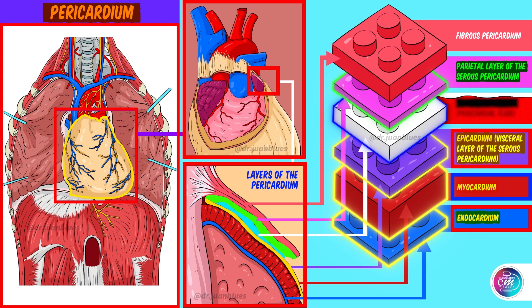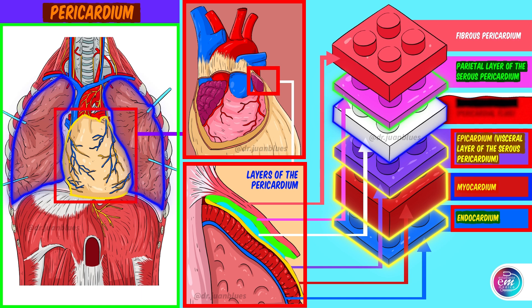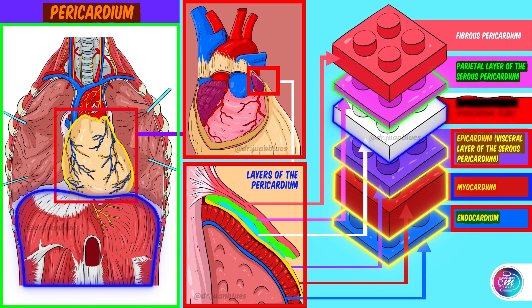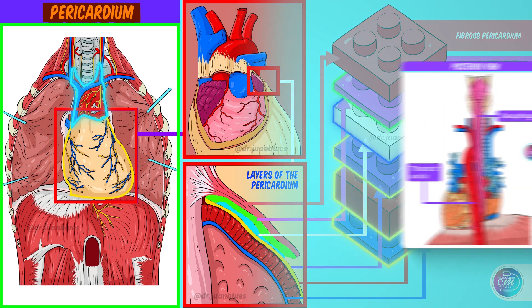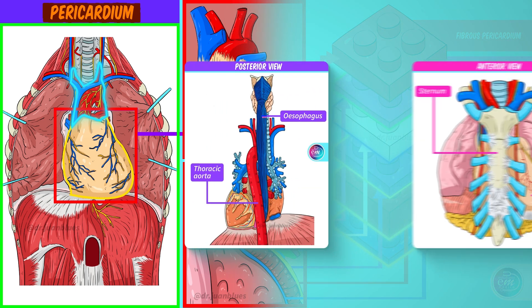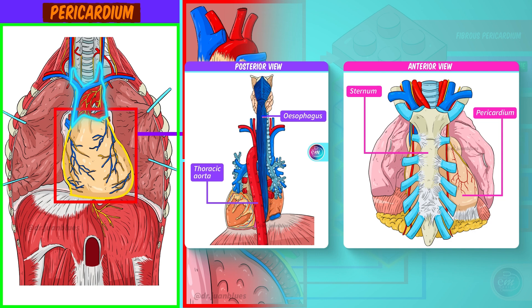Now that we know the layers that make up the walls of the heart and the importance of their relationship with the pericardium, we can observe how our heart is related to the different structures of the thoracic cavity. Laterally, it is related to the lungs. Inferiorly, it is related to the diaphragm, resting on the oval centre of the diaphragm. Superiorly, it is related to the great vessels. Posteriorly, with the oesophagus. And anteriorly, with the sternum and the thymus, bearing in mind that the thymus involutes in adulthood.